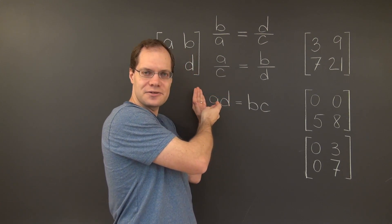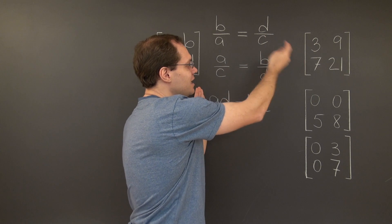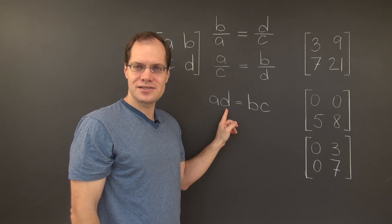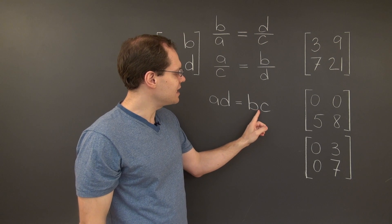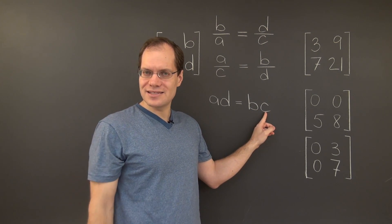Let's apply this criterion to each one of these matrices. In the case of the first matrix, we have 3 times 21, 63, equals 7 times 9, or 9 times 7, once again, 63.